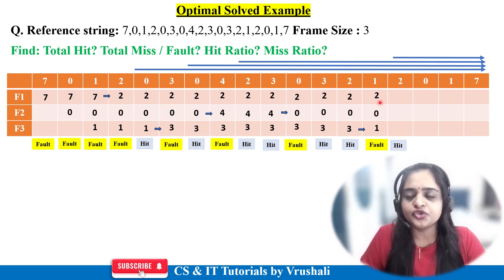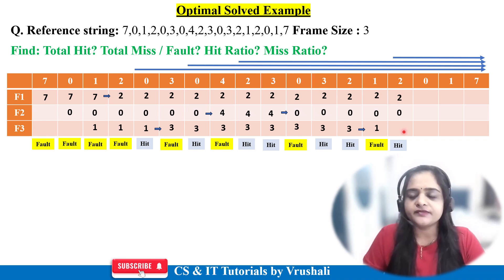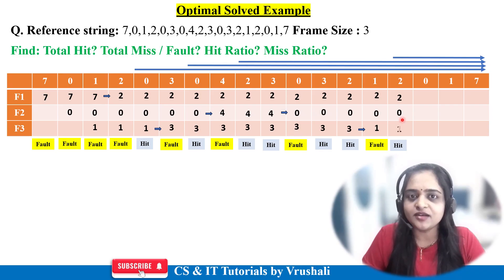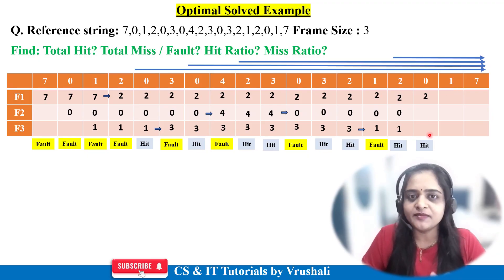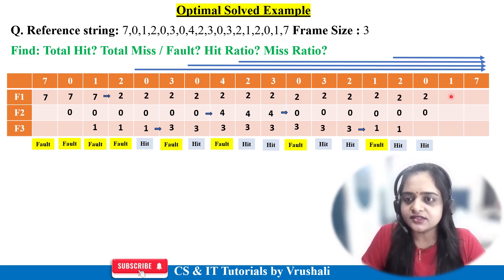Next, the CPU demands page 2 — already present in main memory, so page hit. Write down the data as it is: 2, 0, 1. Next, the CPU demands page 0 — again present in main memory for execution, so page hit. Write down as it is: 2, 0, 1. Next is page 1 — again already present in memory, so page hit. Write down data as it is: 2, 0, 1.